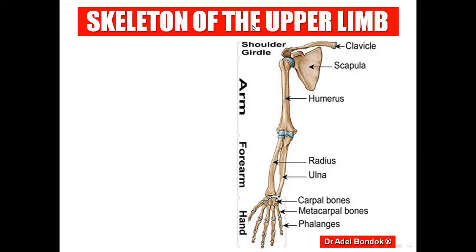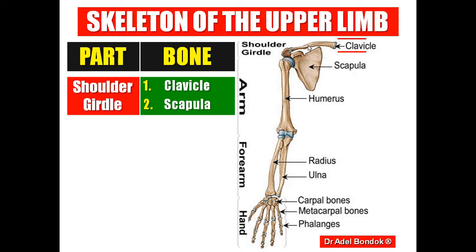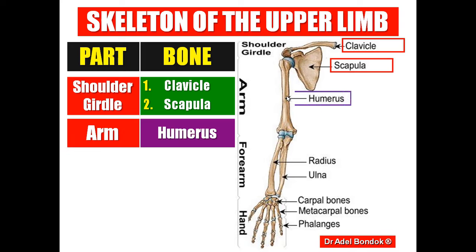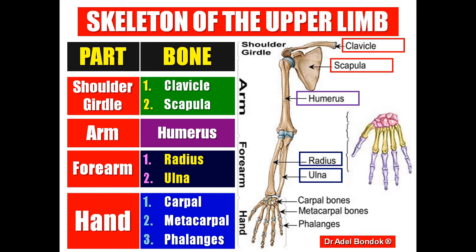Regarding the skeleton of the upper limb: the first part is the shoulder girdle, formed of two bones — the clavicle anteriorly and the scapula posteriorly. Then the arm has only one bone, the humerus. The forearm has two bones: the radius is the lateral bone and the ulna is the medial bone. The skeleton of the hand is divided into three parts: carpal bones, metacarpal bones, and phalanges. The carpal bones are eight, arranged in two rows.